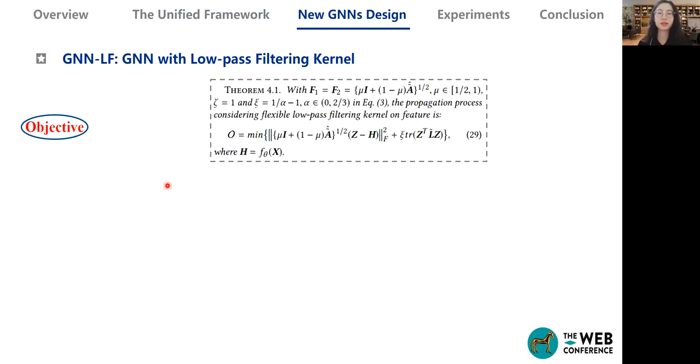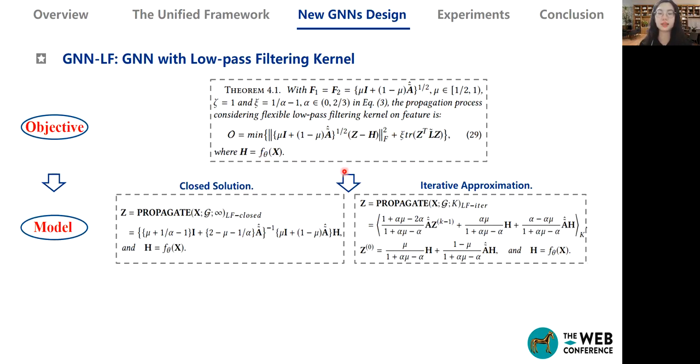Based on the unified framework, we can find that most GNNs require all original information in H to be encoded into Z. However, only considering one type of information is not enough. So in this section, we focus on designing novel F1 and F2 to encode more useful information. Considering that the matrix A has the low-pass filtering capabilities, we first build relations of H and Z in both original and low-pass filtering spaces. The objective is in the following.